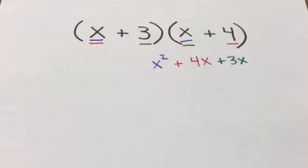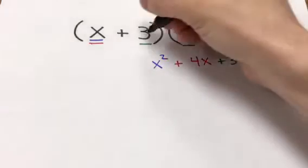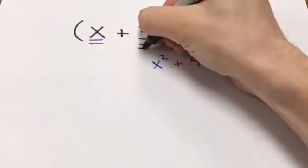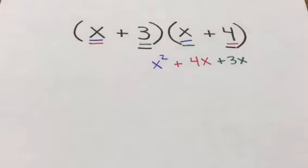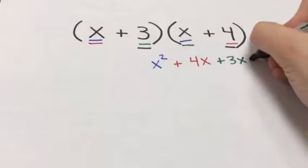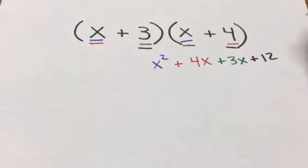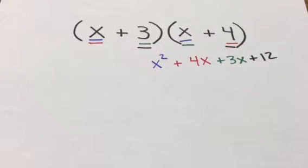Now we look at the last letter in FOIL, which is L — L stands for 'last.' We take the last two terms inside the parentheses and multiply them: 3 times 4 is 12.